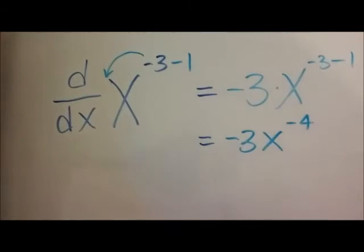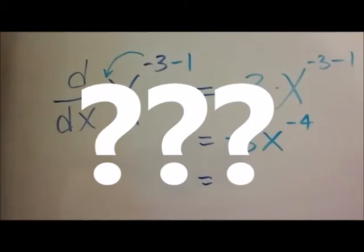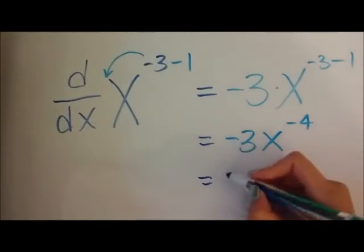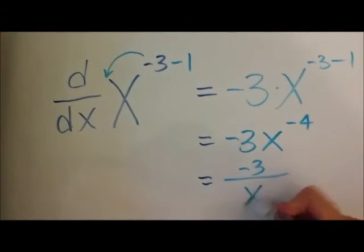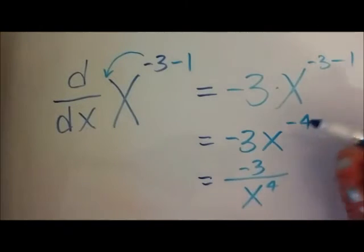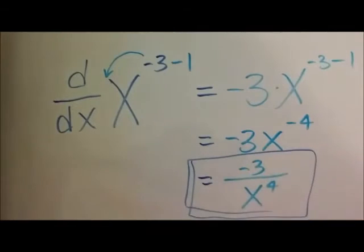And what you could do is you could leave it like this, or just to be safe because, you know, I don't know how Mr. Tan's going to mark it. You're going to do negative 3 over x to the power of 4, which basically just gets rid of the negative exponent. So that would be your answer right there.